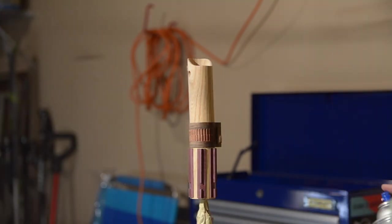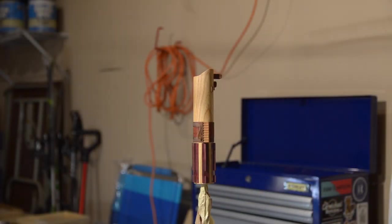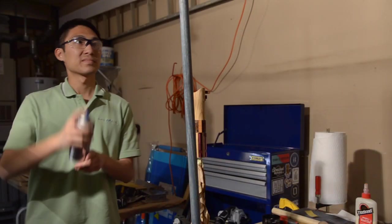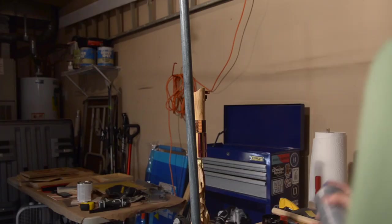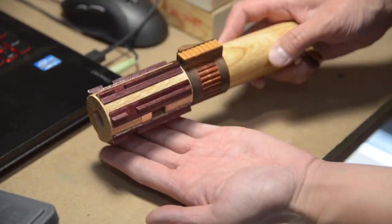For finish, I went with a spray polyurethane. On the first prototype, I had used mineral oil because I didn't have time to let anything cure, but spray poly is easier to get into all the nooks and crannies and lends a bit more luster and durability to the part. And with that, my personal lightsaber was complete.